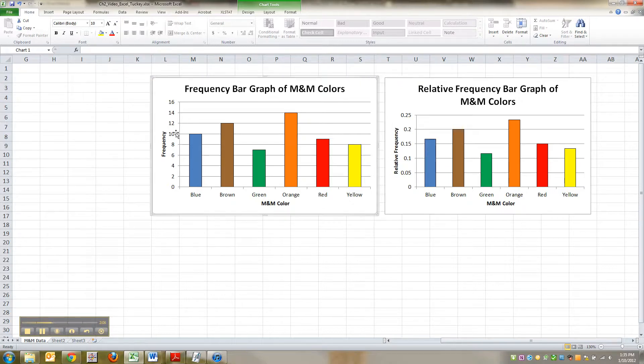So over here, the vertical axis is counts, numbers, whole numbers like 2, 4, 6, 8, 10. You know, it could be 1, 2, 3, 4, 5, 6, 7. It's how often.